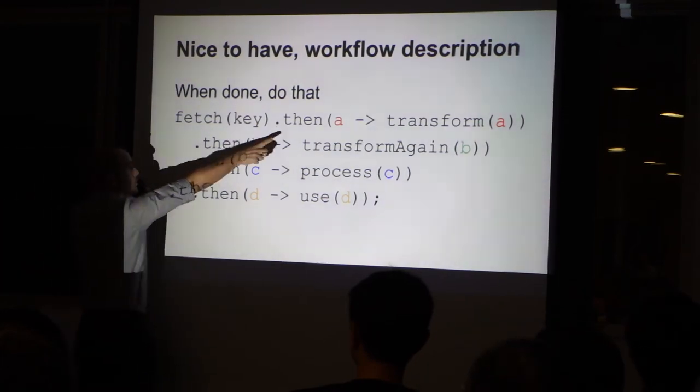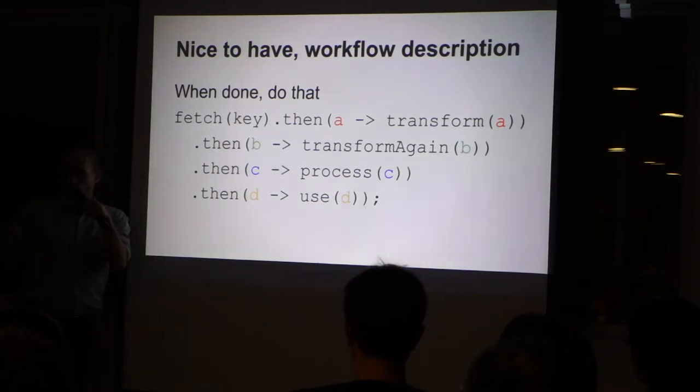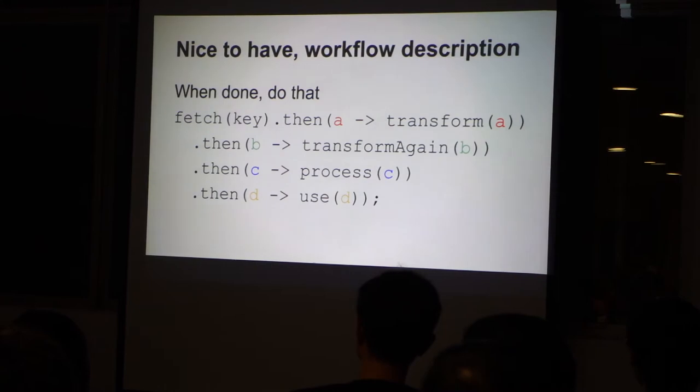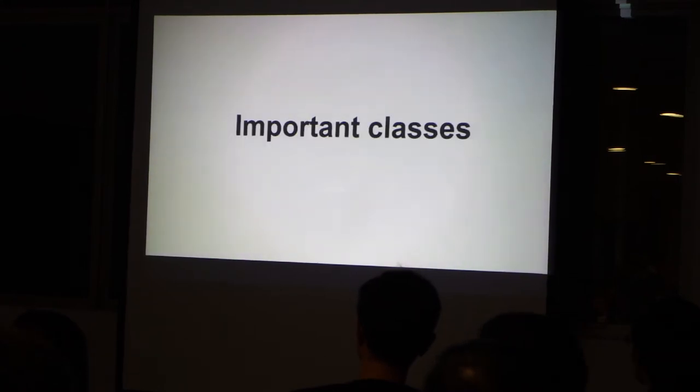I will show some code examples because I made a very small project on GitHub to demonstrate. But before I show you the code, it's better that I explain the classes. There are many classes, there are 4,000 methods in this library, so it's a heavy one. It takes you closer to the 65k limit.